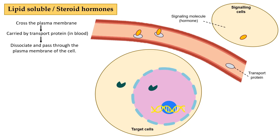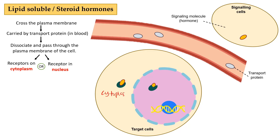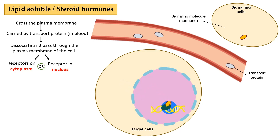Once it reaches the target cell, the hormone dissociates from the transport protein and passes through the plasma membrane. Inside the cell, this hormone will bind to a receptor on the cytoplasm — a cytoplasmic receptor — or it can bind to a receptor inside the nucleus — a nuclear receptor. Both will form a hormone-receptor complex. We call these intracellular receptors because they are located inside the cell.